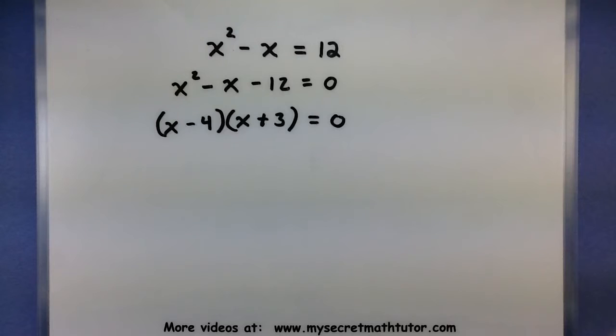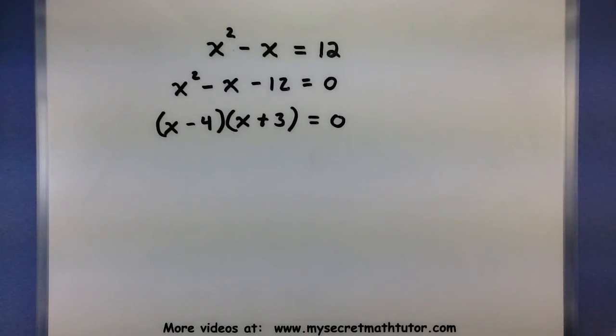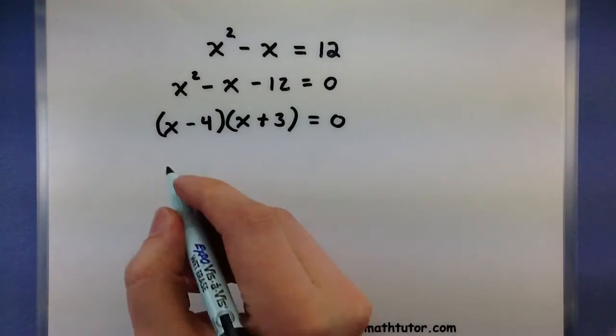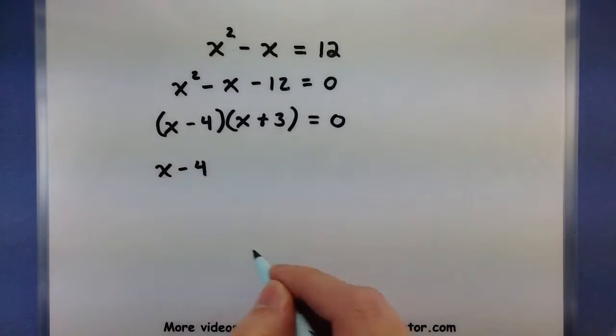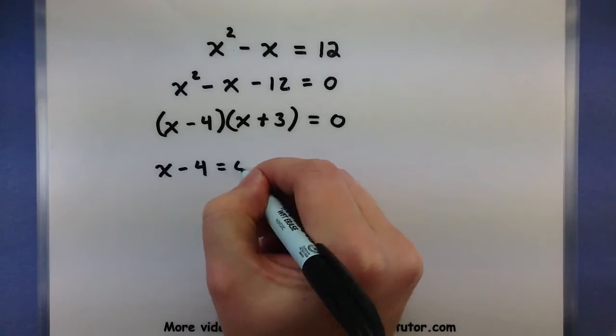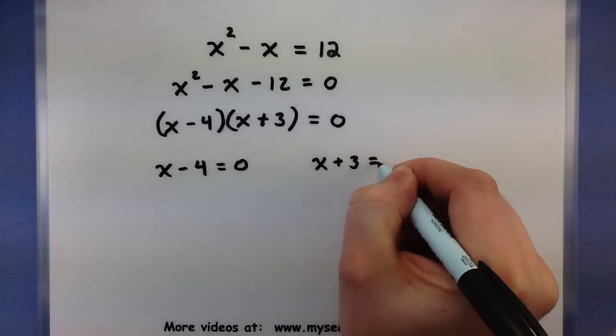So these multiply to give me a negative 12. Perfect. And they add to give me a negative 1. Looks great. So now that we have our factors, we take each of them and set them equal to 0. So I have my x minus 4 equals 0. And I have my x plus 3 equals 0.